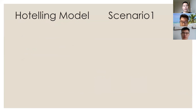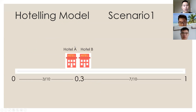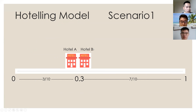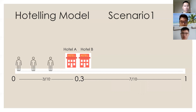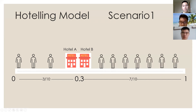Let's look at two basic examples to get a better understanding of the model, then we will dive into more difficult examples. In this scenario, we have two hotels on the street. Zero and one represent the distance of the street — one in total is one kilometer. Hotel A and hotel B are located at exactly the same point of 0.3. Since customers are uniformly distributed, hotel A will get 30% of customers and hotel B will get a larger portion, which is 70% of customers.